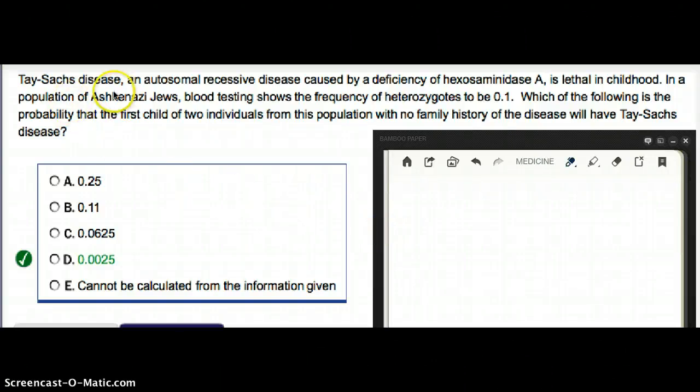This question deals with Tay-Sachs disease, an autosomal recessive disease caused by a deficiency of Hexosaminidase A. It is lethal in children. In a population of Ashkenazi Jews, blood testing shows the frequency of heterozygotes.